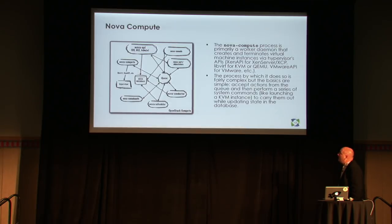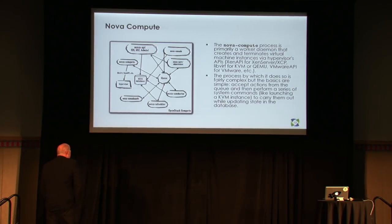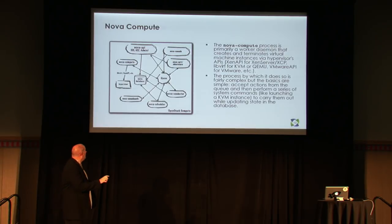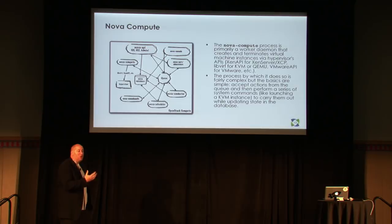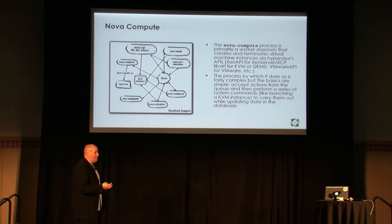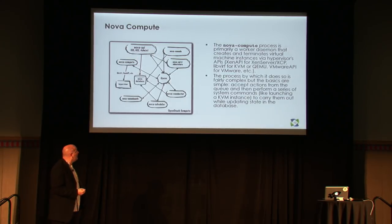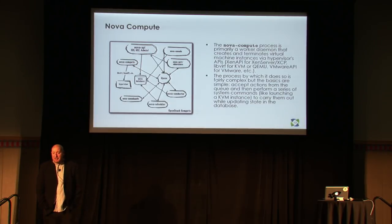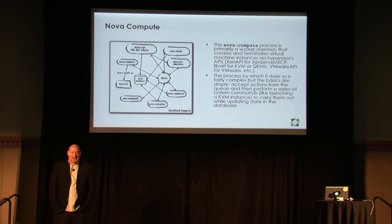The most interesting component is Nova Compute. Nova Compute orchestrates your hypervisor. One thing a lot of people don't understand: OpenStack is not a hypervisor, not a virtualization — it is a framework that allows you to control your virtualization. OpenStack supports most different hypervisor or virtualization technologies, whether VMware, Hyper-V, KVM, Xen, or derivatives. It does this through a set of libraries: XenAPI or Xen commands for the Xen world, libvirt for KVM, the VMware API, or other libraries to actually do the orchestration.